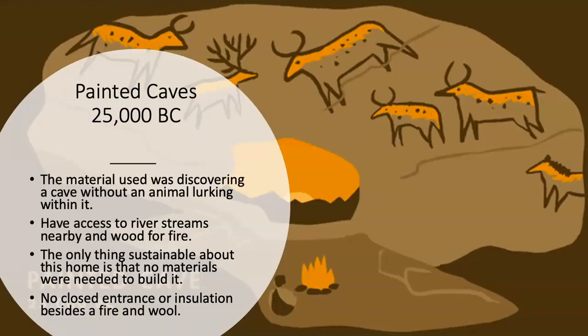As we begin with painted caves from 25,000 BC. The materials used involved discovering a cave without any animals lurking within it — any cave you found was yours for the taking. It also needed to be near river access and have firewood nearby. The only advantage of this home is that no materials were needed to build it, but the downfall is there's no enclosed entrance or insulation besides a fire or wool.